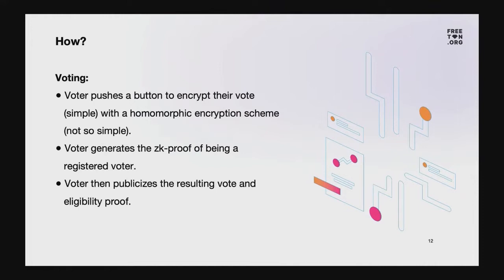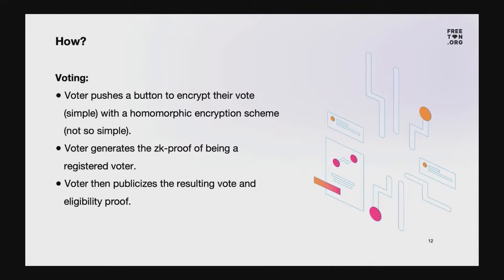We got our voter checked and registered. Next step: voting itself. The voter wants to vote, but it is also required to keep their vote private. What should we do? Let's encrypt the vote. But how could we count the votes afterwards then? Decrypting them so everyone could see who voted for whom, or make someone responsible for keeping this secret? No, it doesn't work like that. We need a special kind of encryption here — a homomorphic one.